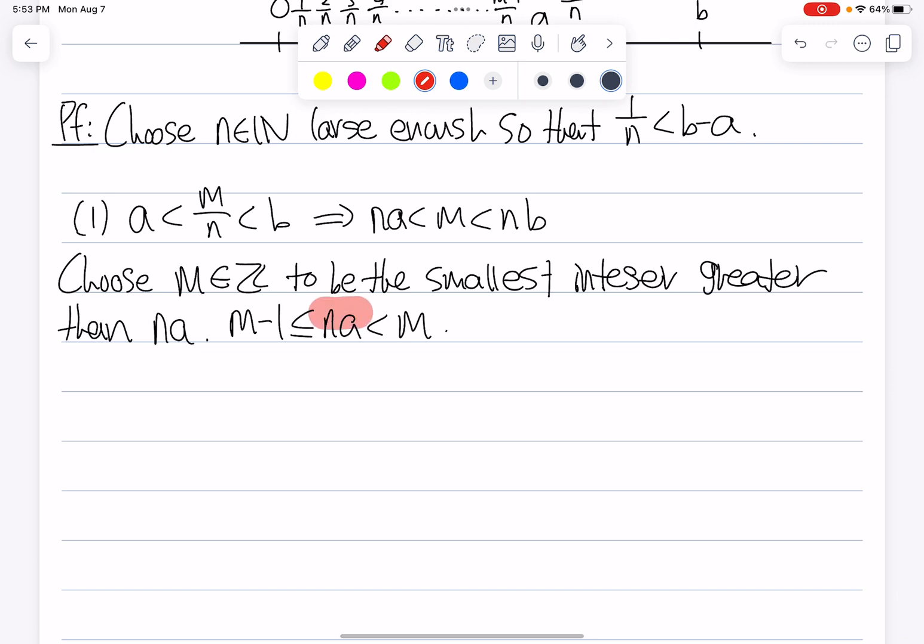So notice that immediately our first half of the proof is done here. This inequality implies that A is less than M over N.